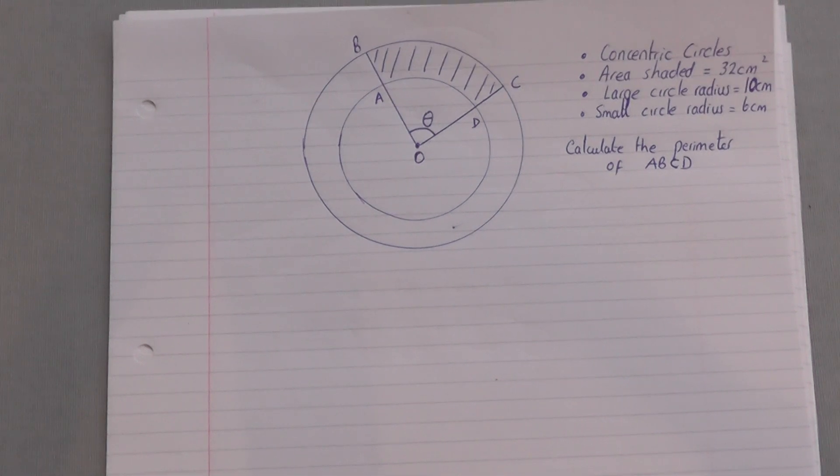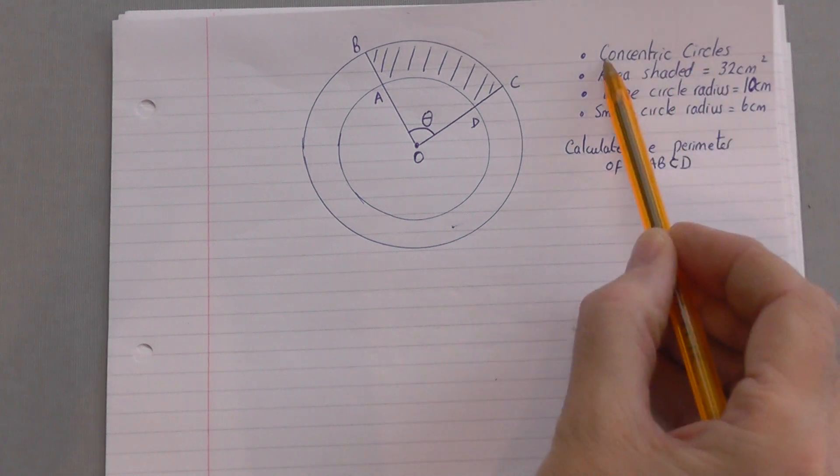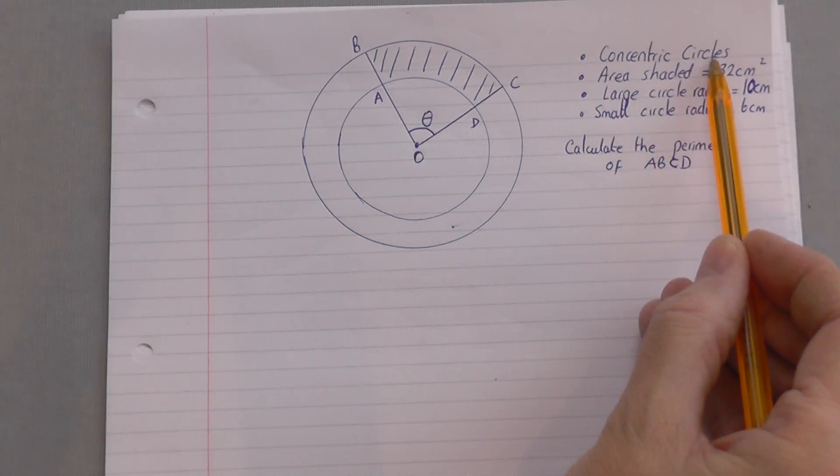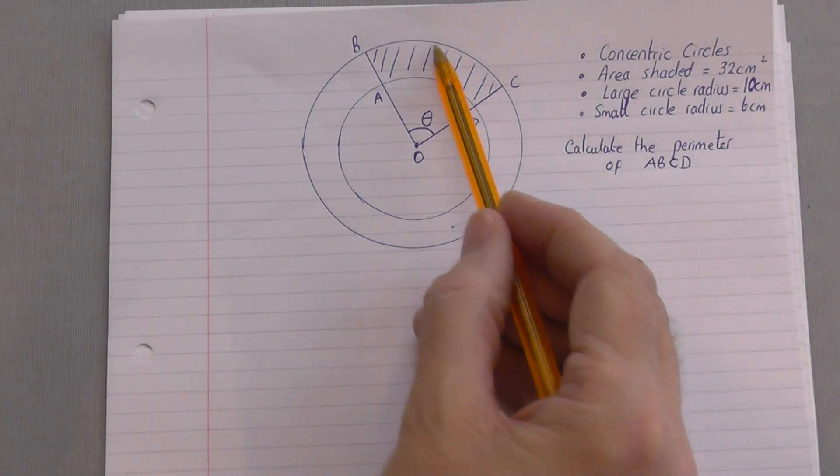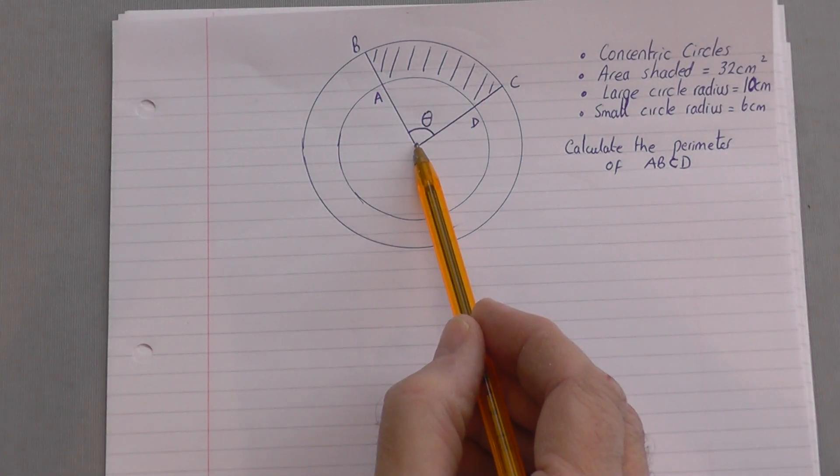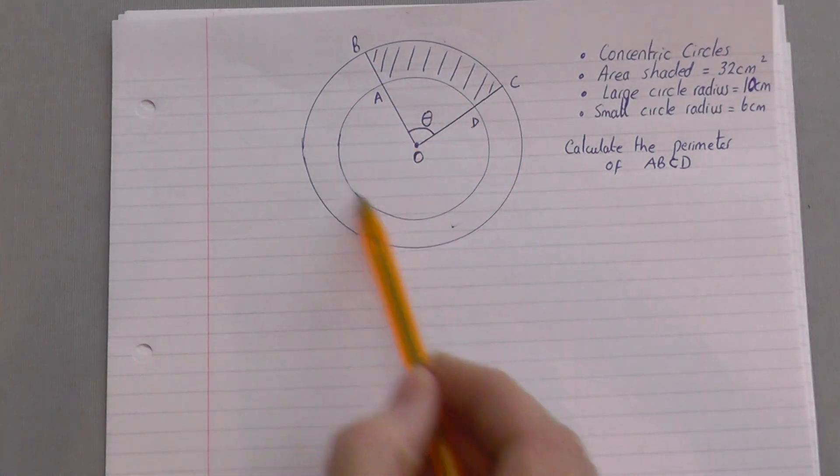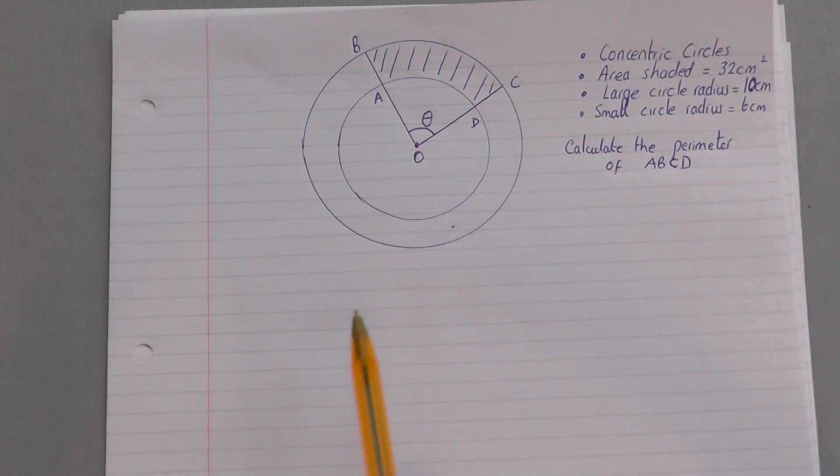In this question we're given two circles which are concentric circles. Concentric circles means they're two circles with the same center for both, but they've got a different radius in each case. So you get this effect with one lying inside the other.